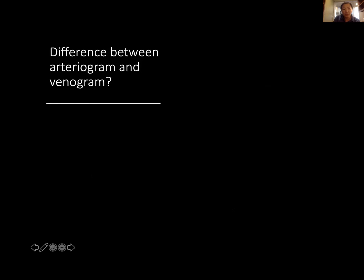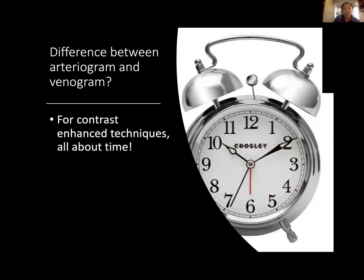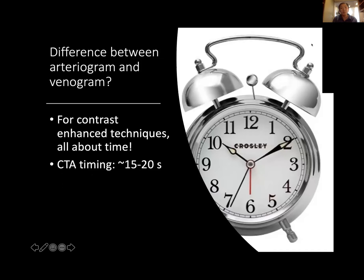CTA, CTV, DSA, and contrast-enhanced MRA and MRV all rely on putting in intravascular contrast material to make vessels stand out against the background. The difference between an arteriogram and venogram is all in the timing. By timing the image acquisition when contrast gets into the arterial vessels — about 15 to 20 seconds after injection — you can see the arteries stand out. If you wait about 35 seconds, the contrast moves from arteries to veins, giving you a CTV.